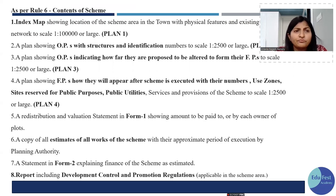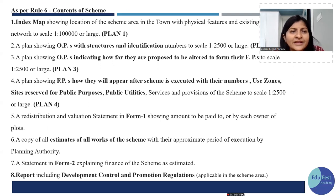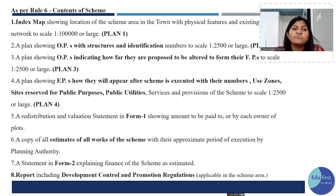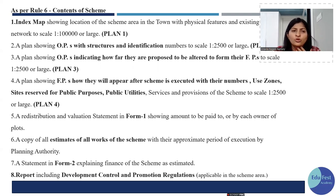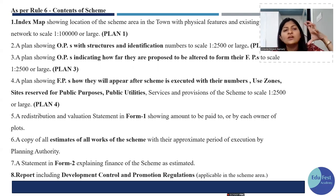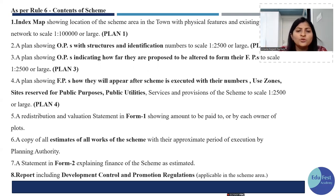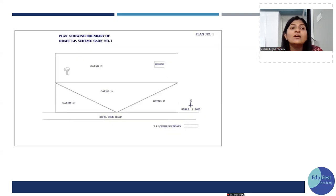Exam questions can be asked about the plans in a TPS. Plan 1 is an index map (not to scale). Plan 2 shows the original plot with structure and scale. Plan 3 shows the original plot and where the final plots are proposed — a map of all reconstitutions. Plan 4 shows how the area will appear after the scheme is executed, with zones, amenities, and utilities proposed. Form 1 is the valuation statement; Form 2 covers the finance of the scheme.